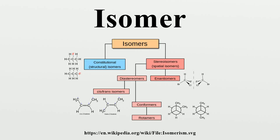Allene and propyne are examples of isomers containing different bond types. Allene contains two double bonds, whereas propyne contains one triple bond.